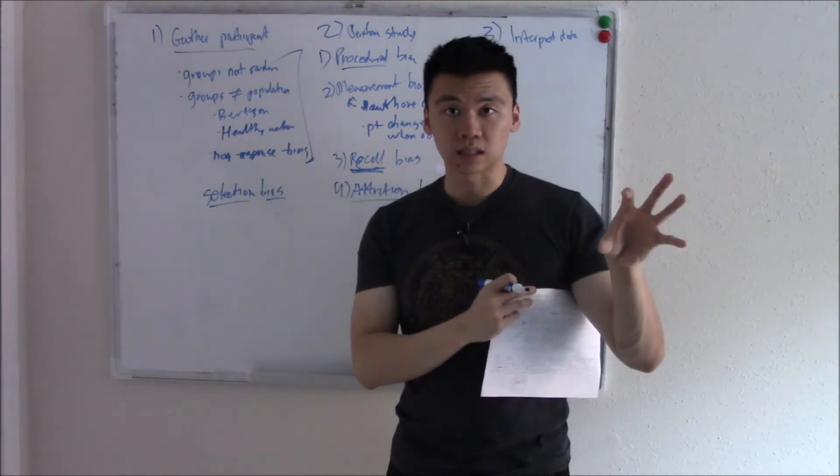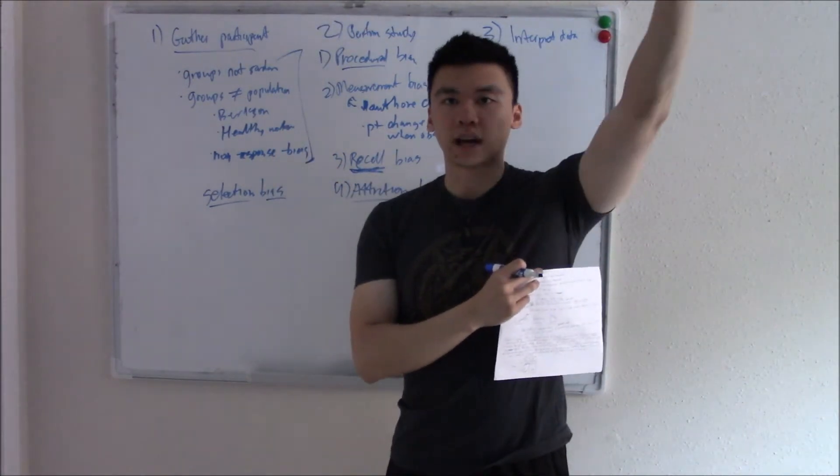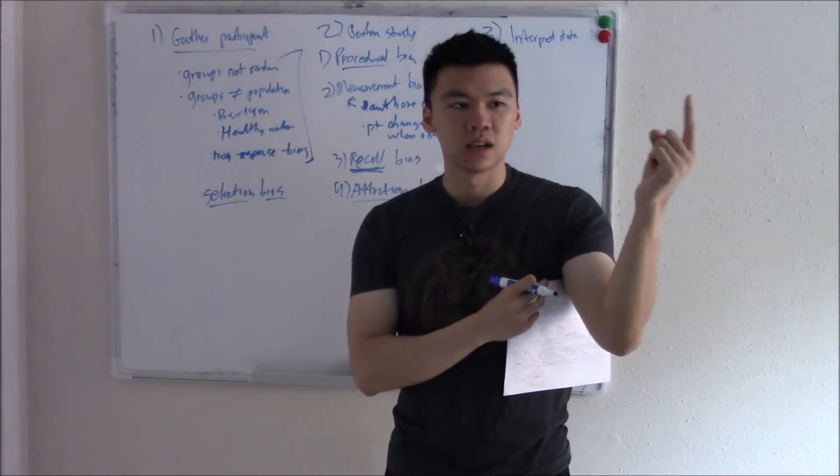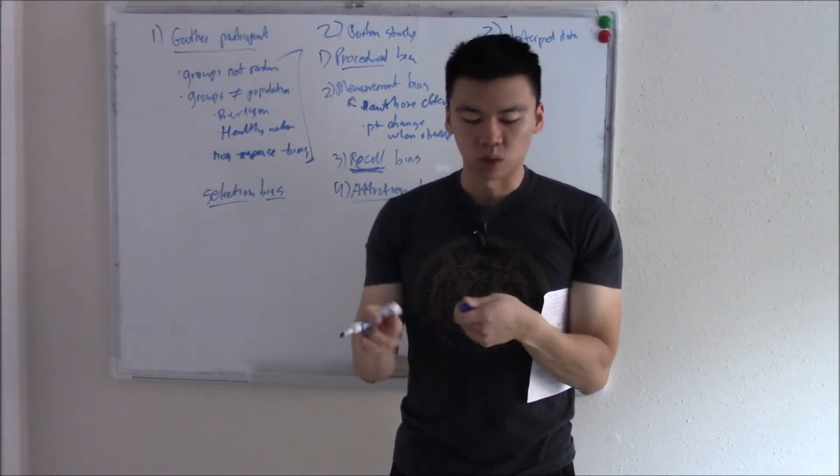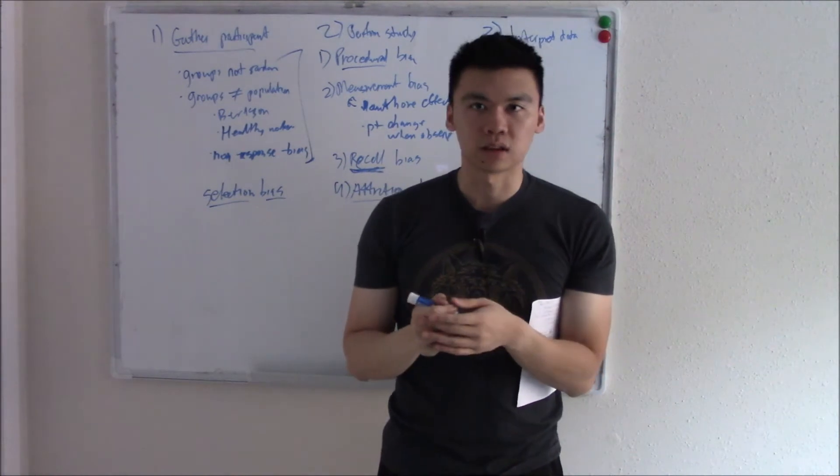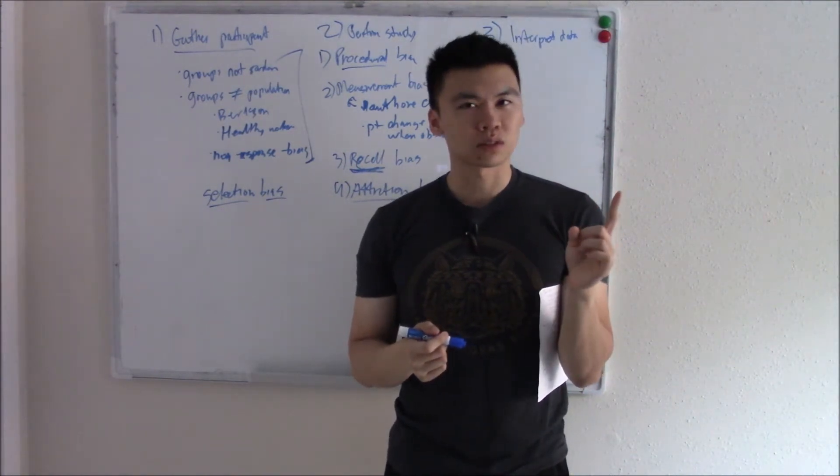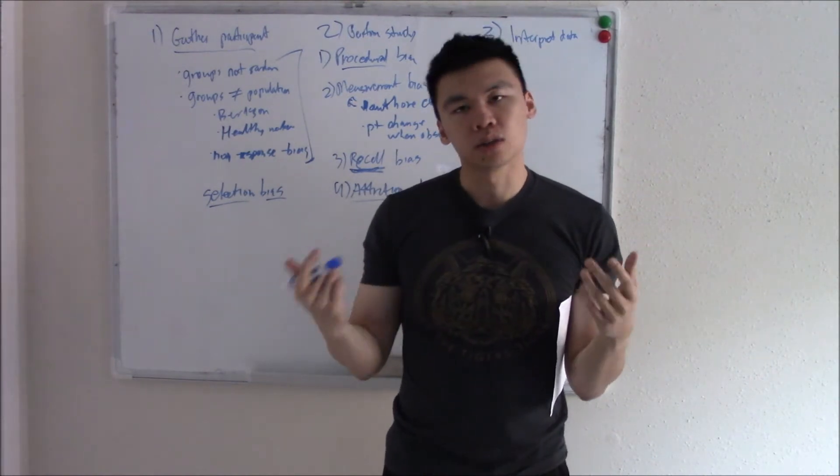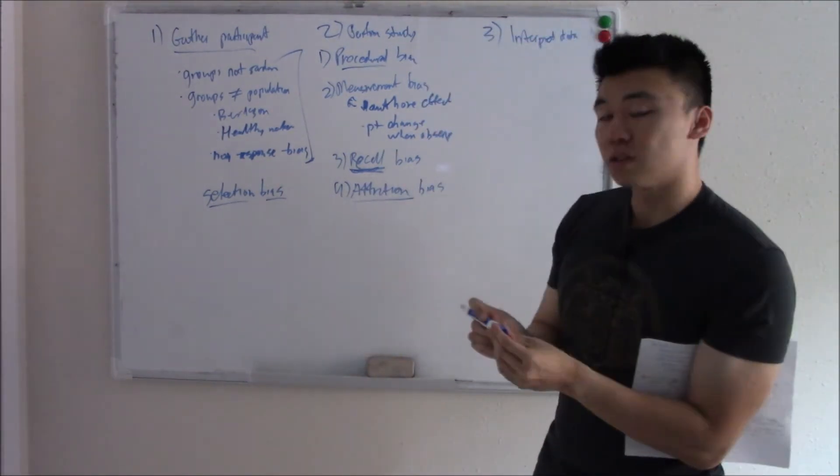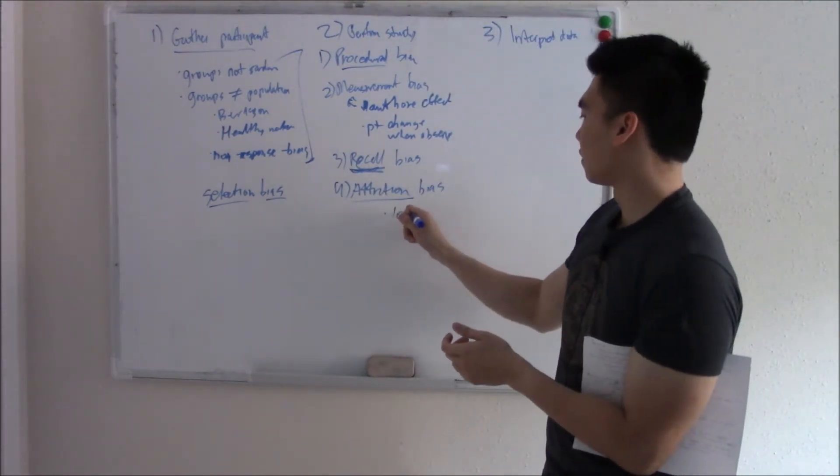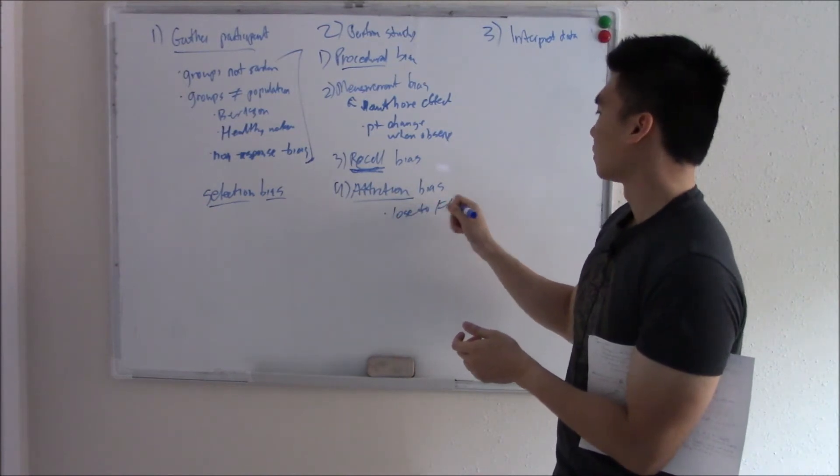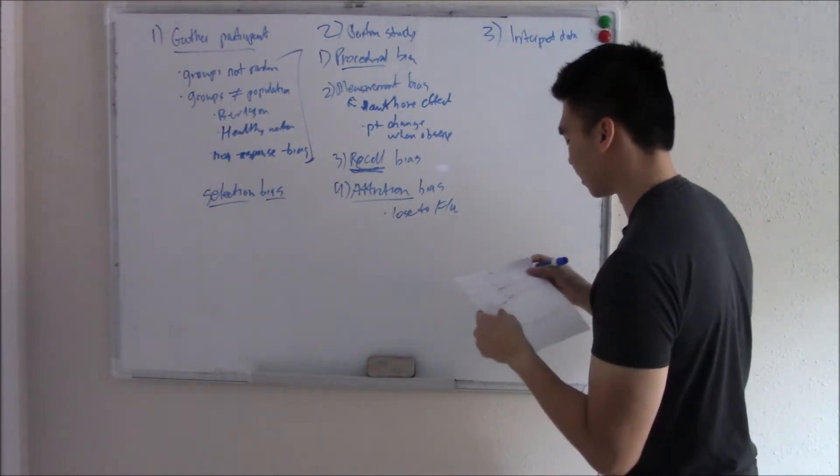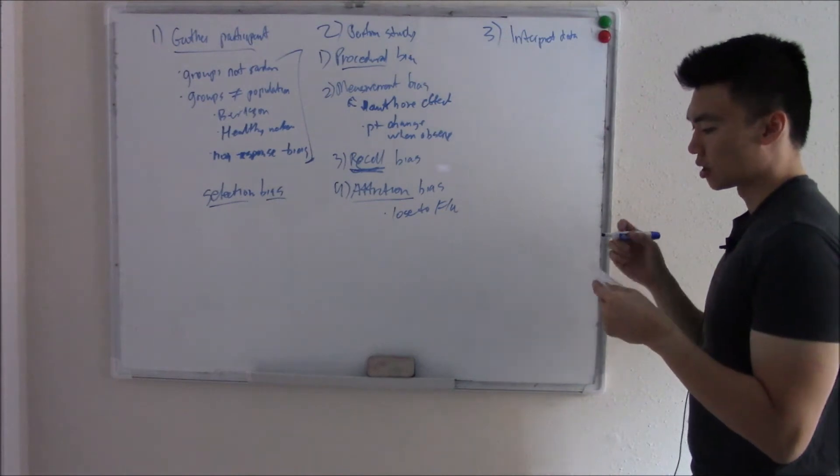The 50 people that you did experiment on, you lose 49 of them to follow-up. You only have one person left and they tell you that drug you gave them was horrible, caused all these side effects. Can you trust that one person? Who knows? Maybe the other 49 loved that drug. You can't really trust them. You lose a ton of people in follow-up. That's attrition bias.